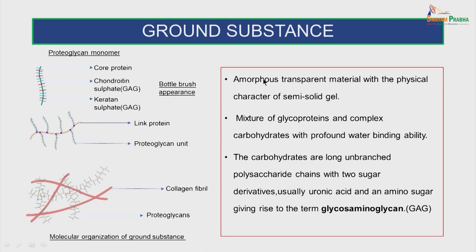Coming to the ground substance: this is an amorphous transparent material with the physical character of a semi-solid gel. It is a mixture of glycoproteins and complex carbohydrates with profound water-binding ability. The carbohydrates are long, unbranched polysaccharide chains with two sugar derivatives, usually uronic acid and an amino sugar, giving rise to the term glycosaminoglycan. This is a proteoglycan monomer — you can see the core protein, the chondroitin sulfate and the keratan sulfate, which are all glycosaminoglycans giving a bottle-brush appearance. The linked protein with the proteoglycan units forms the complete molecule. This is the molecular organization of the ground substance showing the collagen fiber and the proteoglycan.